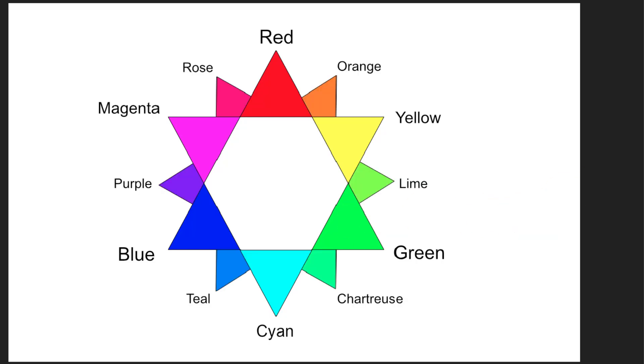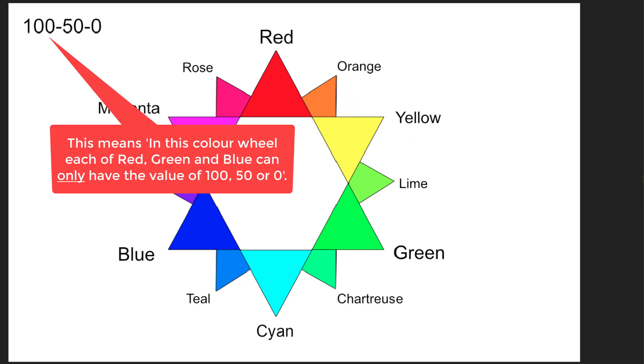And we can go to the tertiary colors. Now we've got the other colors in between. And for example, orange is 100% red, 50% green, and 0% blue. And to explain that, the colors here, all of them, are made up of some combination of either 100%, 50%, and 0%. So red, green, and blue can only have one of these. It's not red, then green, then blue. It's any of these, but they can only pick from one of them.